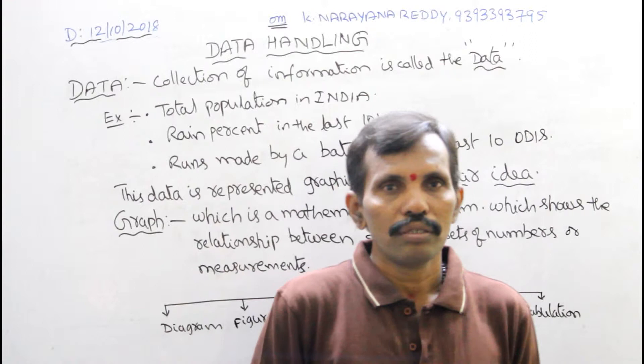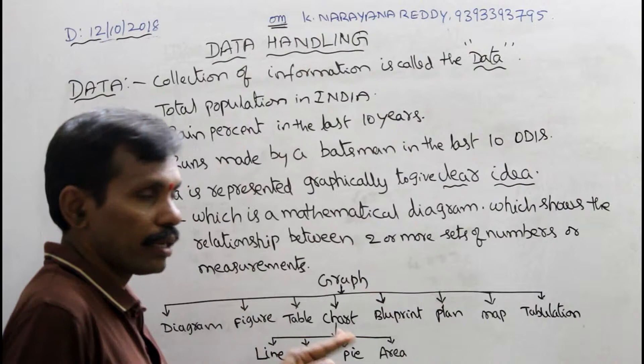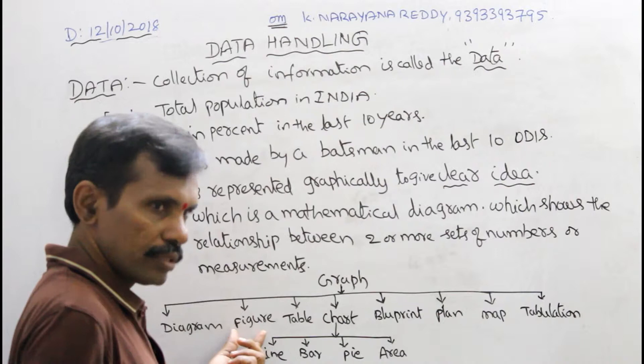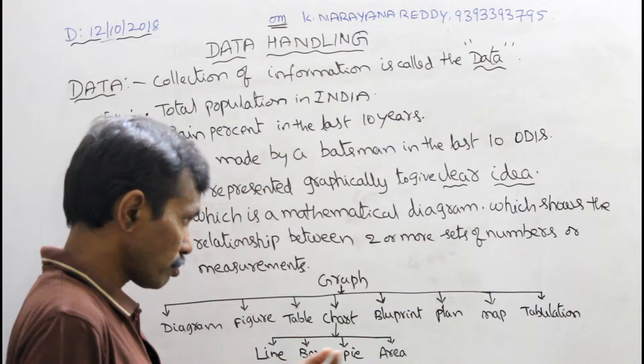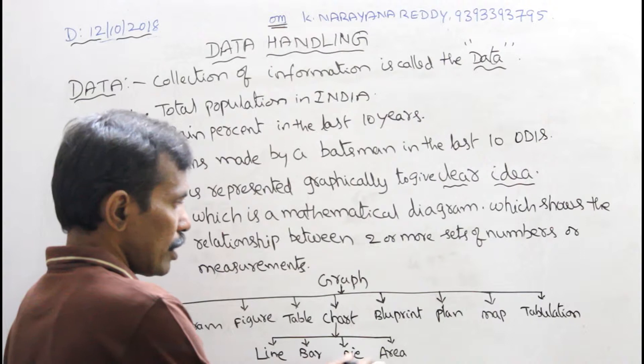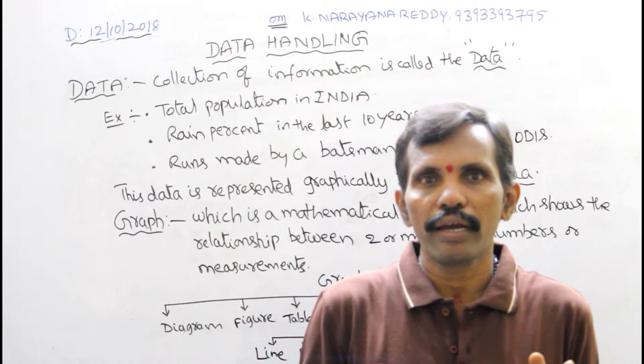These graphs are of different types. Some of them are: diagram, figure, table, chart, blueprint, plan, map, application. In chart, again there are types: line chart, bar chart, pie chart, area chart. In this way, you can draw a graph regarding the data — that is important to observe.